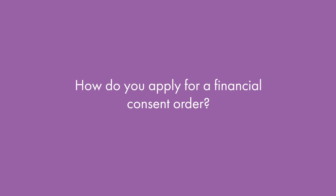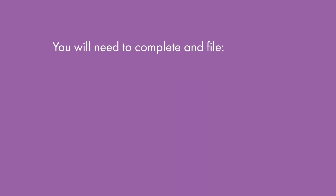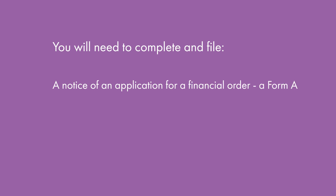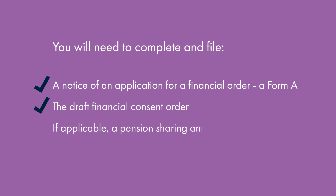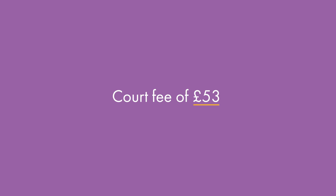You apply for a financial consent order by filing a number of documents at court. You will need to complete and file an application referred to as a notice of an application for a financial order — a Form A — the draft financial consent order, and if applicable to the agreement you have reached, you may need to file a pension sharing annex, and a court form called a statement of information, often referred to as a D81. A family lawyer will be able to assist you with completing and drafting all of these documents for you. There is also a court fee of £53 payable to the court on filing the documents.